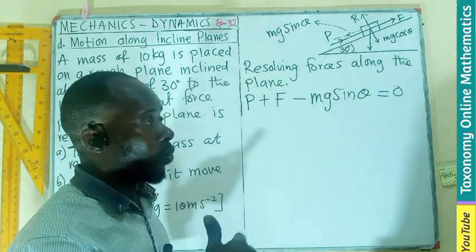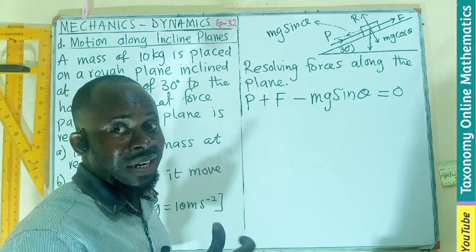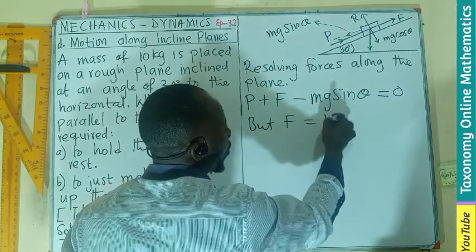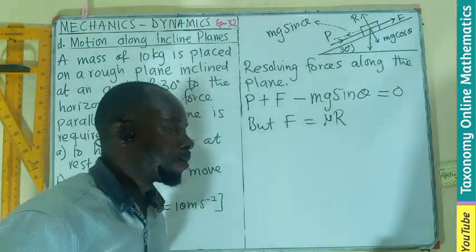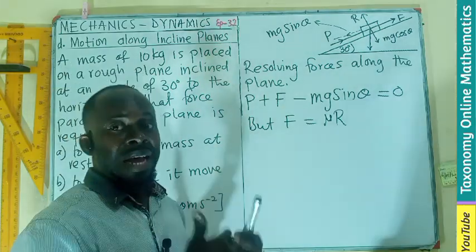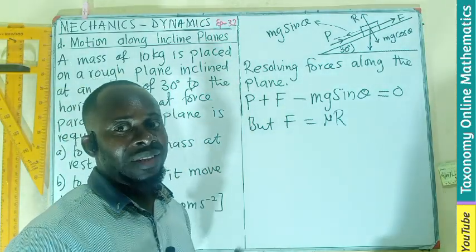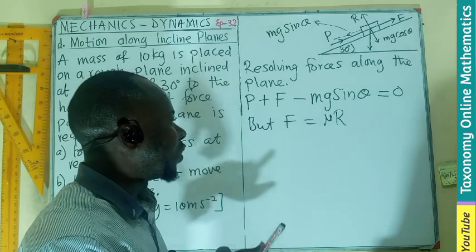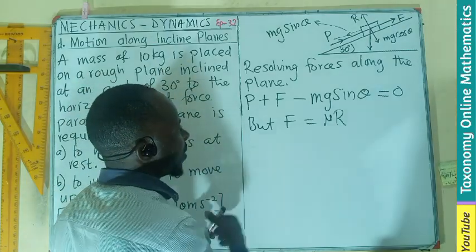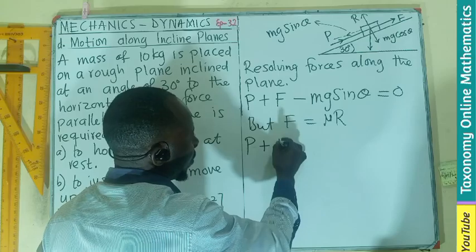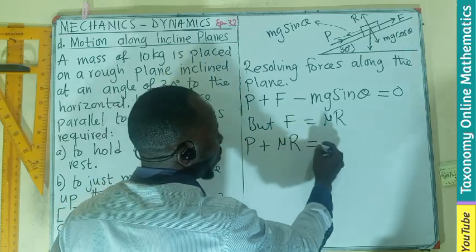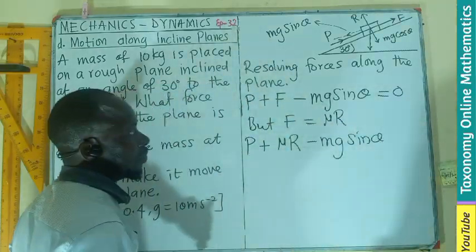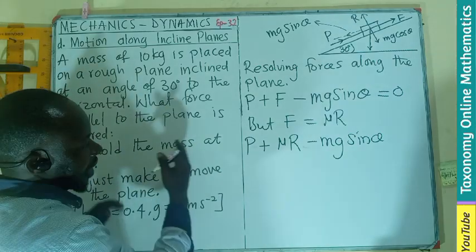I will have the upward force, which is P plus friction, minus the downward force mg sine theta, supposed to give us zero. But don't forget, this is a limiting force. So we have the coefficient of friction attached to it. F equals coefficient of friction times the normal reaction. This is explained extensively in the first part, which is the static mechanics. So by substitution, P plus coefficient times R equals minus mg sine theta.